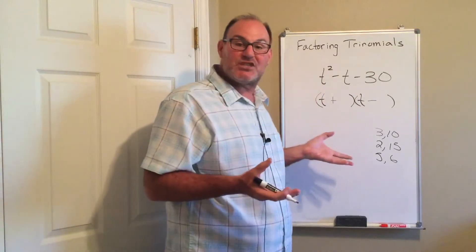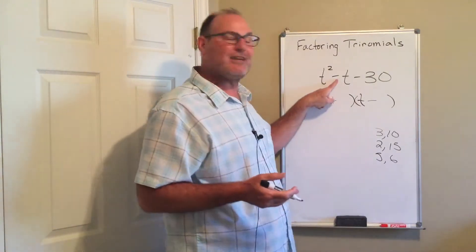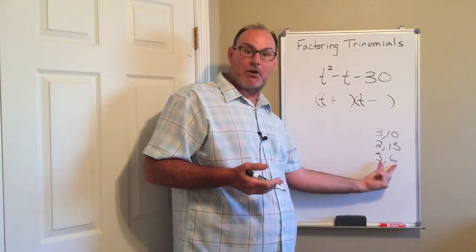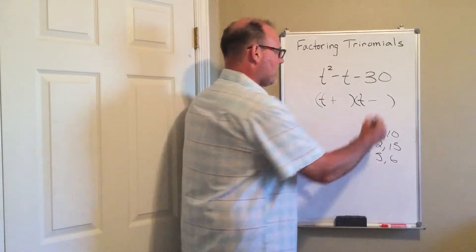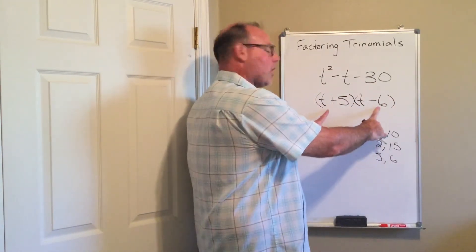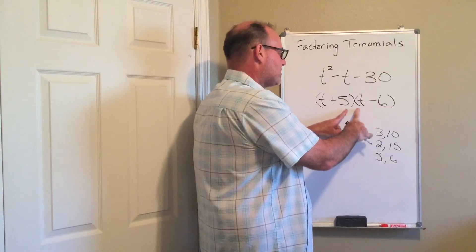The other decision to make is my outers and inners have to add up to a negative 1. So you need to make the bigger number the negative number. So the negative 6 and positive 5. My outers are negative 6t. My inners are plus 5t. A negative 6 plus 5 adds up to a negative 1.